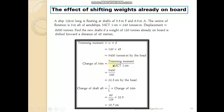The change of trim is trimming moment divided by MCT. The MCT at this present draft is given to be 240 ton-meters, meaning the moment to change trim by 1 centimeter is 240 tons. The trimming moment is 5400 ton-meters. So the change of trim = 5400 ÷ 240 = 22.5 centimeters. This is the change of trim by head — by forward — because the mass was shifted forward.